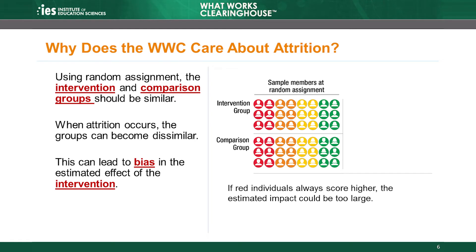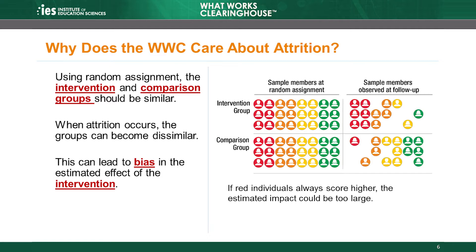Suppose an intervention actually has no effect on students' test scores, so the true impact is zero. However, it may appear that the intervention had a positive impact because of the students who remain in the groups after attrition. For example, imagine that the individuals shown in red in this illustration always score higher than all of the other individuals. There are equal numbers of red individuals in the intervention and comparison groups at random assignment, but at follow-up the study experiences some attrition. Because there are more red individuals in the intervention group than in the comparison group, the intervention group, on average, has higher test scores at follow-up than the comparison group. As a result, the intervention may appear to have an impact when it did not because of the attrition.